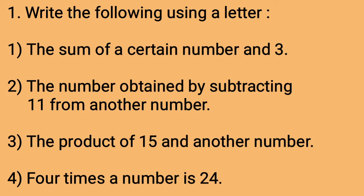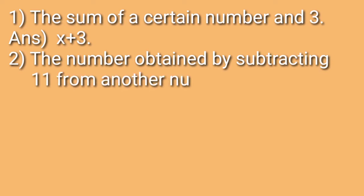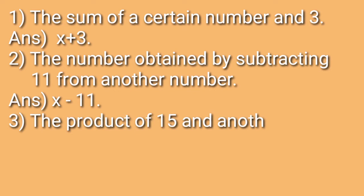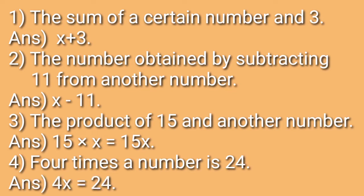Let us see how to write it in equation form. The sum of a certain number — we will put it as any letter. We must have learned this in 5th standard. The sum of a certain number means we will write it as x or a, any letter. So the answer is x plus 3. The number obtained by subtracting 11 from another number is x minus 11. The product of 15 and another number is 15 into x or 15x. 4 times a number is 24, that is 4x is equal to 24.